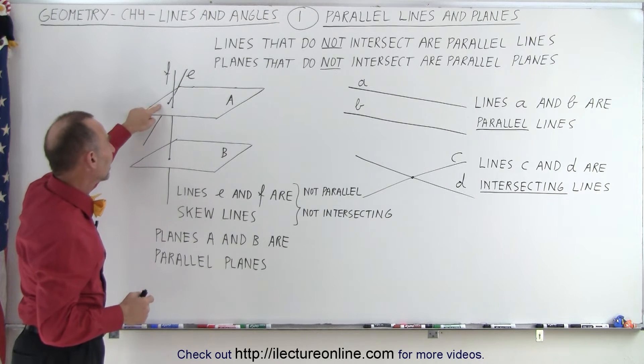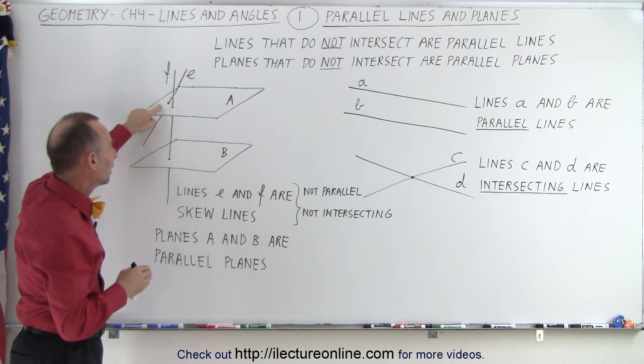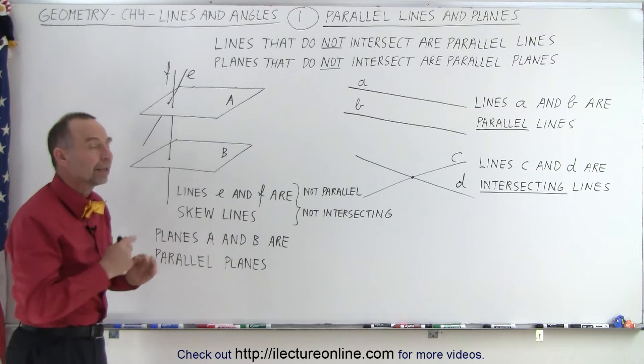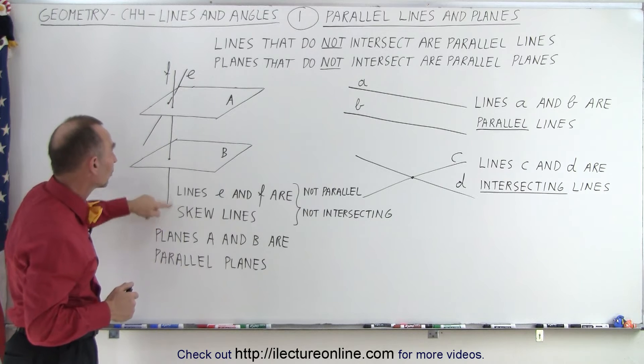What if we have two lines that are not on the same plane? They do not intersect, and they are not parallel to one another. Well, in that case, we call them skew lines.